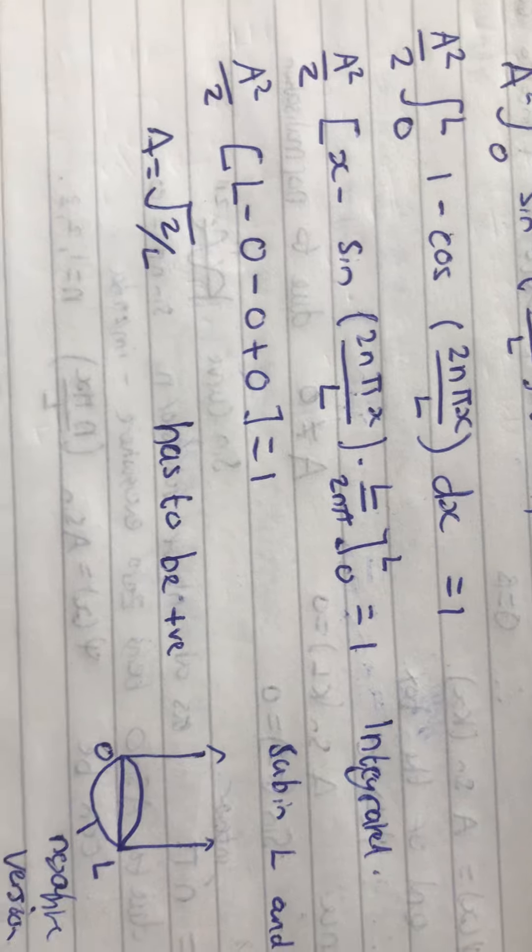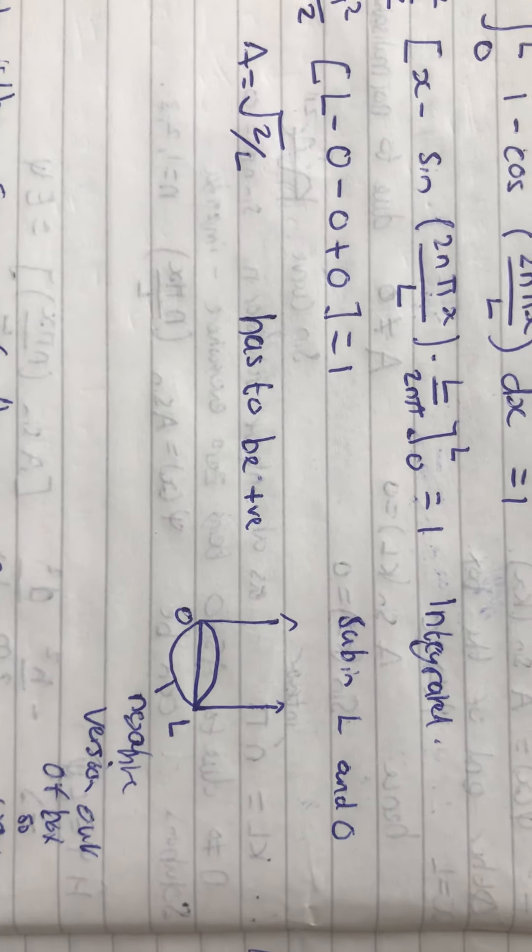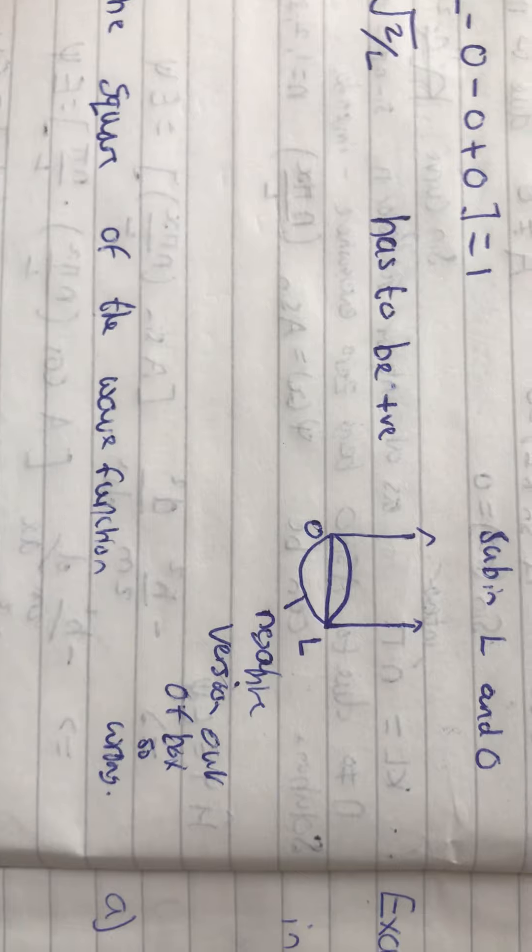Then we've got a is equal to root 2 over L. That has to be positive. Otherwise, the negative version is out of the box, so that's wrong.